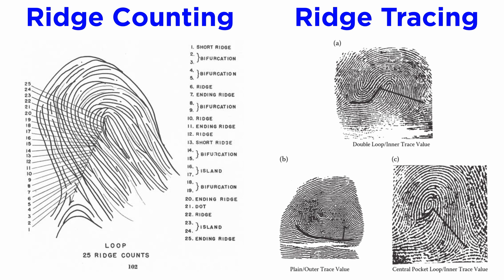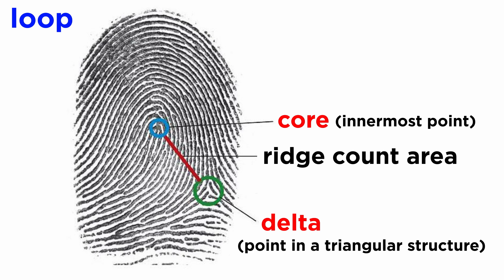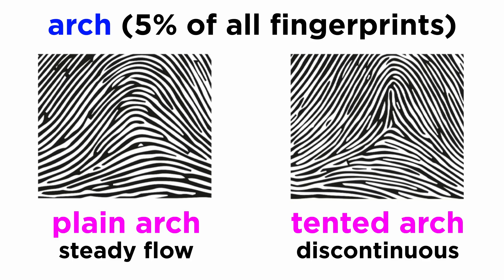Now that we are familiar with ridge counting and tracing, we will learn how to classify fingerprints based on these concepts. Hopefully you have all of your rolled fingerprints ready on a fingerprint card or a sheet of paper. Try to perform ridge counting or ridge tracing on these patterns, depending on whether it's a loop or a whorl. For a loop, use a pencil for drawing a line between the core and the delta for ridge counting, and write the resultant ridge count below it. Similarly, conduct ridge tracing on whorl patterns and classify them as inner, outer, or a meet. But what about arches? Just leave them alone for now.